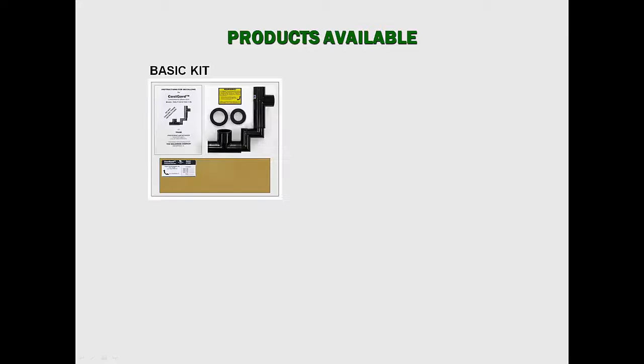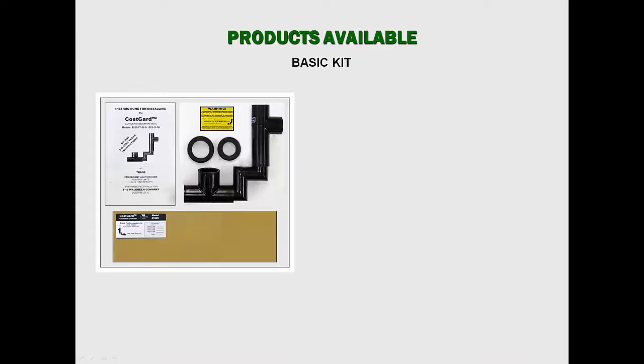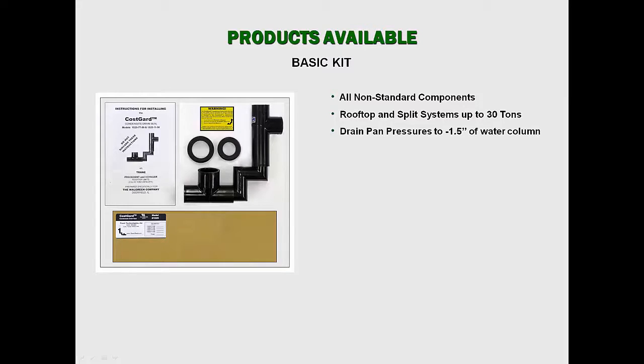CostGuard condensate drain seals are available in three different kits: a basic kit, custom kit, and a system kit. Basic kits include all non-standard components needed for installation, and are suitable for all manufacturers' rooftop units and split system air handlers up to 30 tons, with drain pan pressures to negative one and one-half inches of water column, and are available in three-quarter inch and one-inch drain sizes.